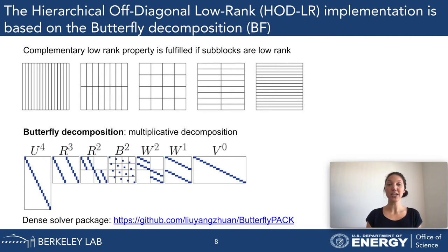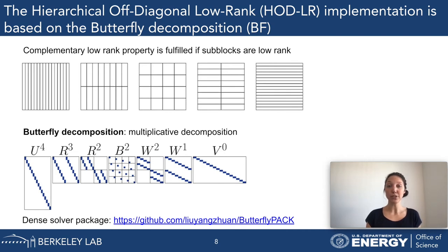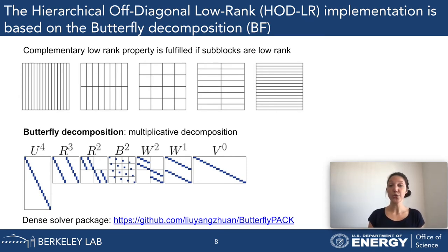The top figure visualizes the so-called complementary low-rank property. Here a matrix of dimensions M×N is subdivided into sub-matrices whose row and column dimensions multiply to the order M. The complementary low-rank property states that the butterfly decomposition exists if all of these sub-matrices are of low rank. Through recursive low-rank factorization, the butterfly operator can be represented as the product of sparse matrices.